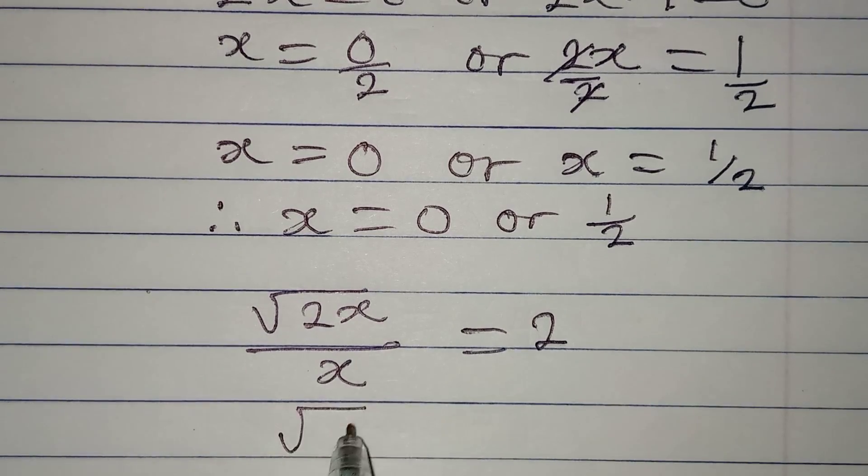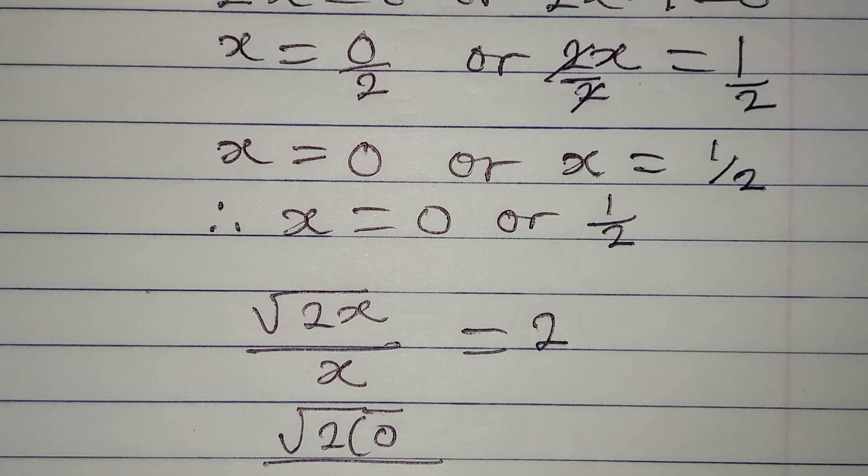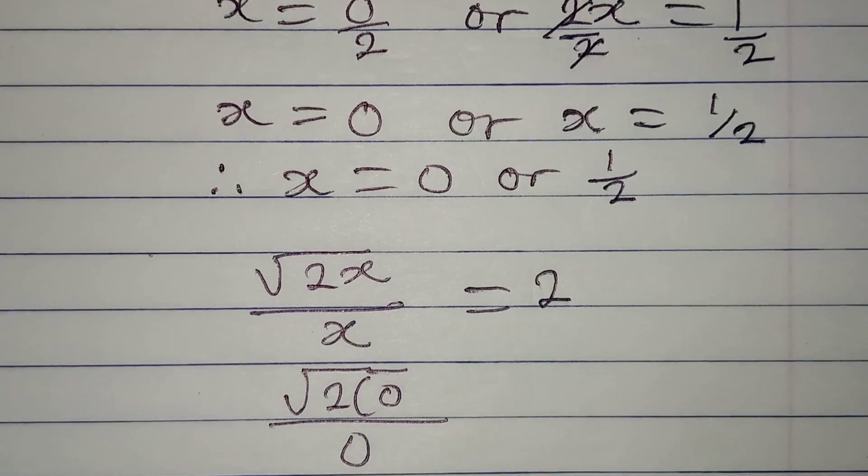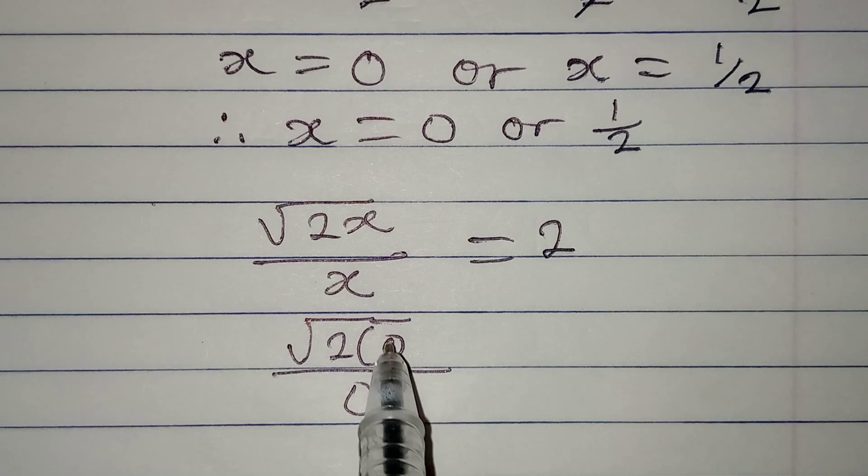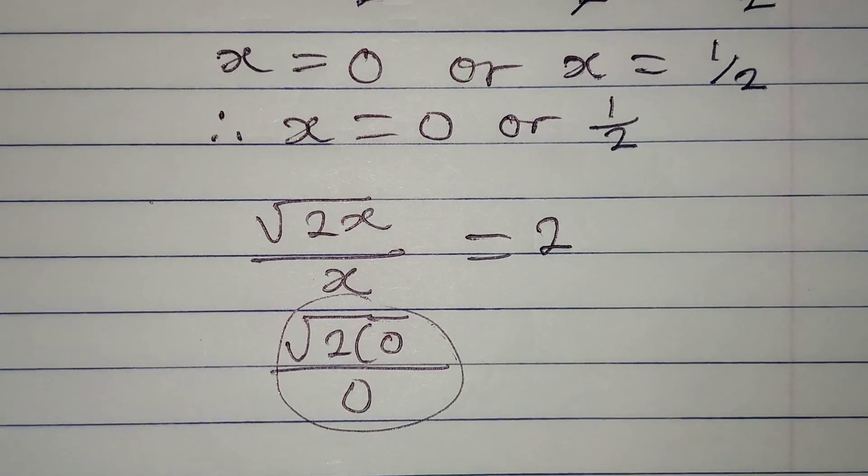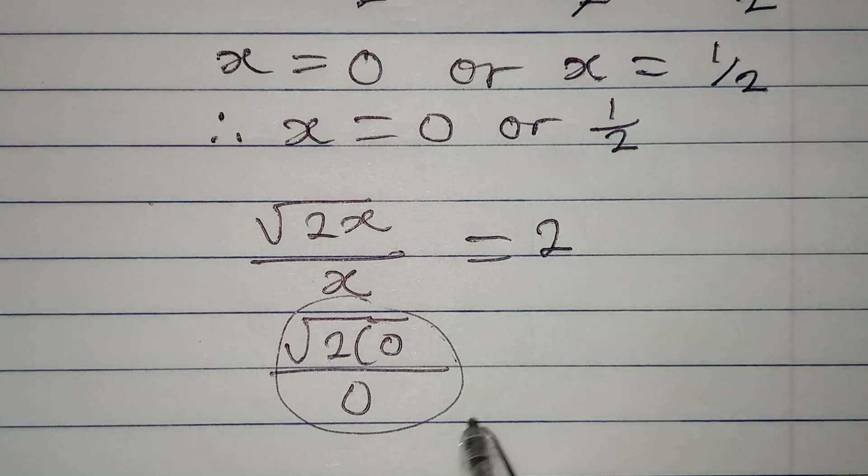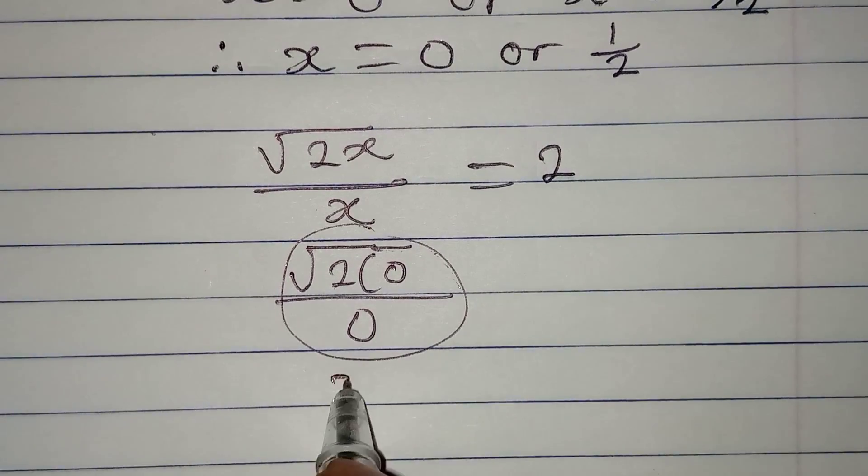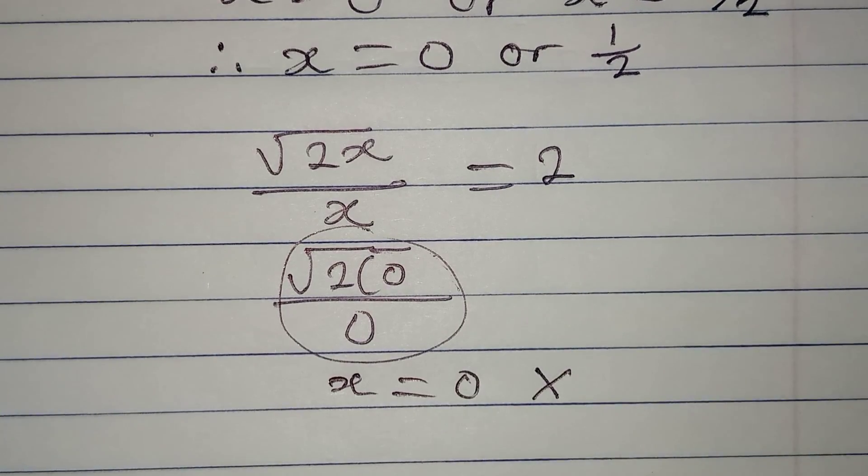Then we're going to have square root of 2 multiplied by 0 divided by 0. And the fact that we are dividing this by 0 means that this is undefined, because when you have to divide anything by 0 it is directly undefined. So this is to confirm that x to be equal to 0 does not satisfy the equation.